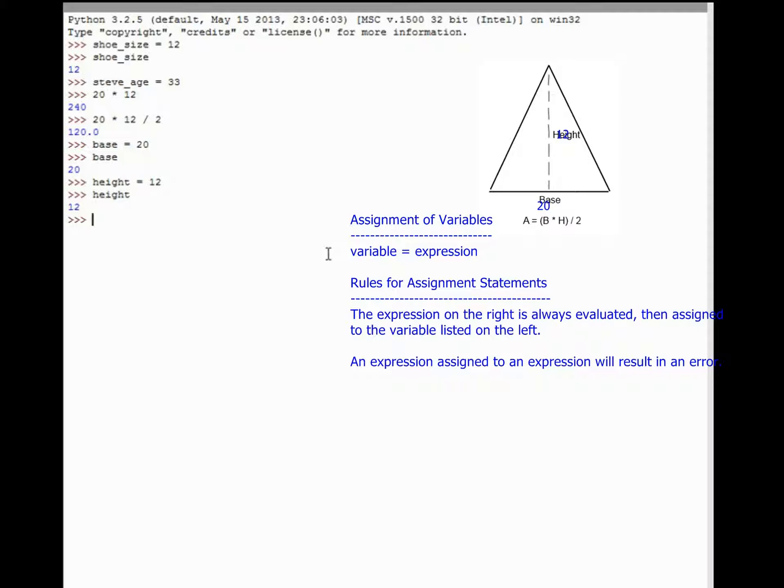And that equal sign is what's called an assignment statement. An assignment statement is always phrased so that the variable equals an expression. In this case, the variable equals a number. Base equals 20, height equals 12. When I do my mathematical calculations right now, I can do base times height divided by 2, and that equals 120. That's because base is the equivalent of 20, height is the equivalent of 12, so base times height is the equivalent of writing 20 times 12. It just so happens those two values are stored in variables at this time.